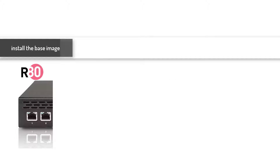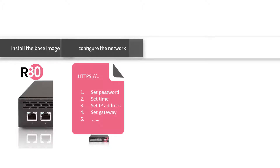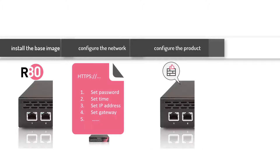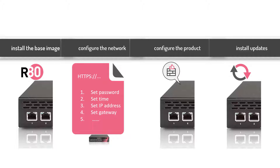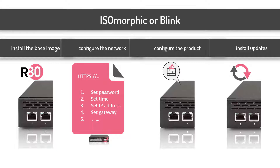Today you can install the base image, script the basic network configuration, configure the product, and install the latest updates using the isomorphic tool or a new tool called Blink. With isomorphic, you build the base image, any hotfixes, and the network and product configuration to create a bootable USB drive. Let's image a Checkpoint appliance using a bootable USB drive made using isomorphic.